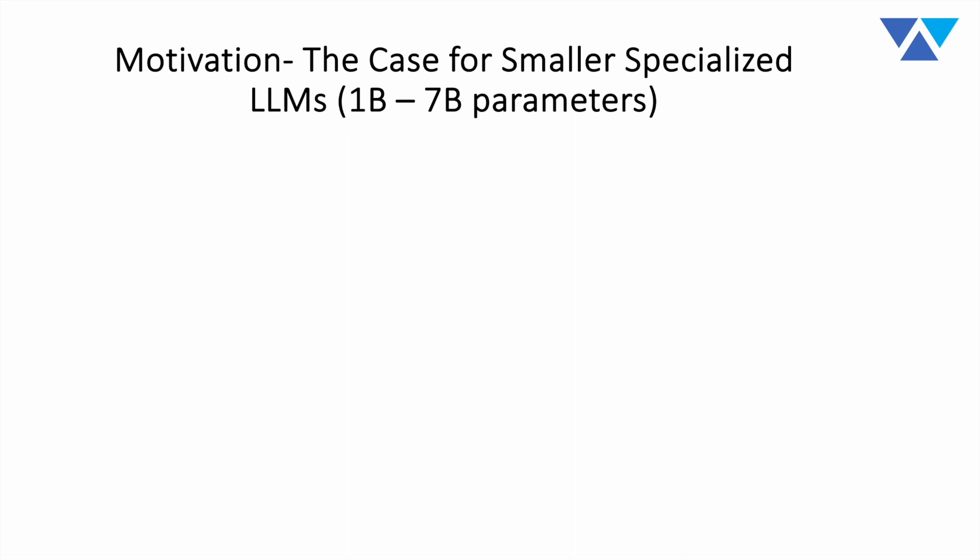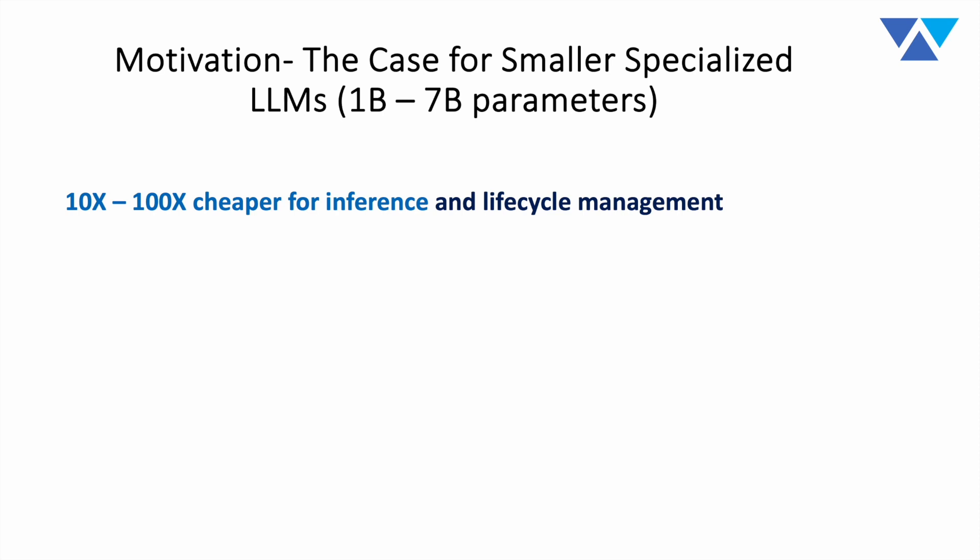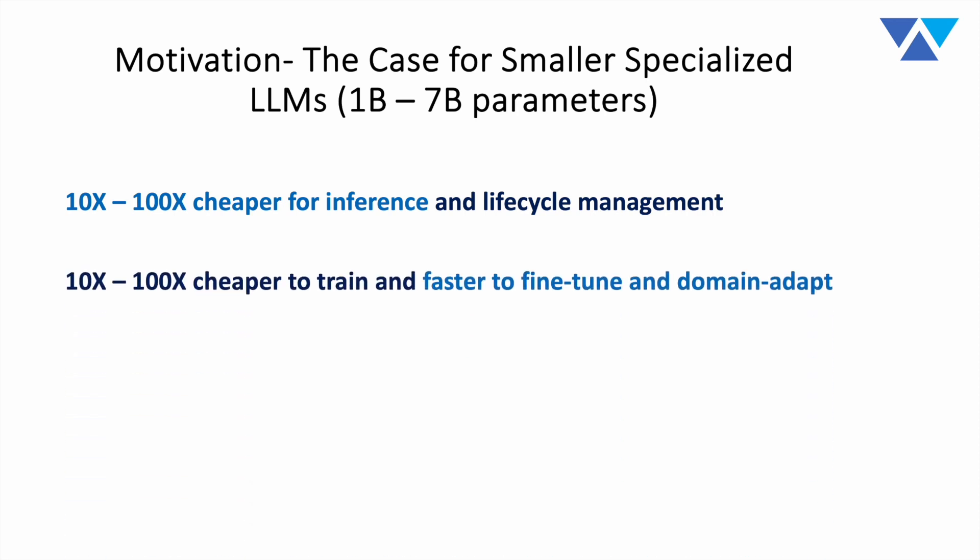The case for smaller, specialized models — which are primarily open source today — is that they bring very significant benefits. Smaller models in the range of 1 billion to 7 billion parameters can typically be run at least one order of magnitude, sometimes two orders of magnitude cheaper than large proprietary models of 100 billion parameters and up. Not just from an inference point of view, but from a training point of view as well — much, much cheaper.